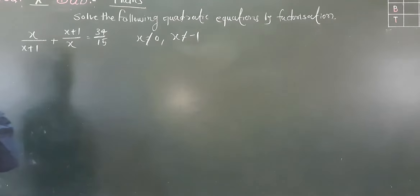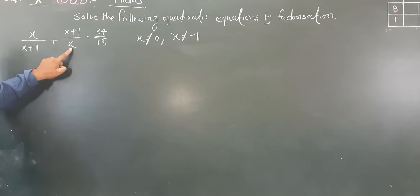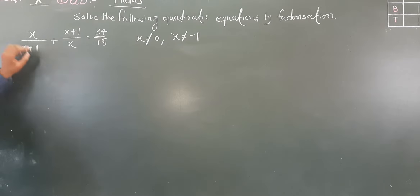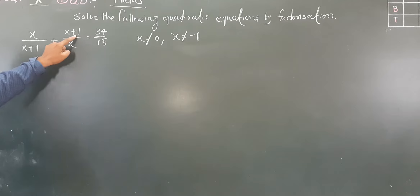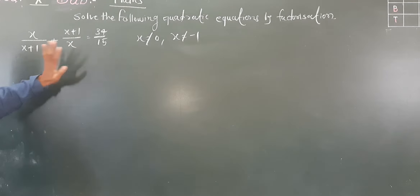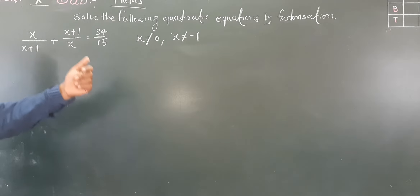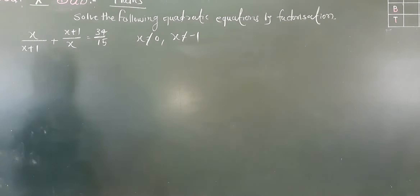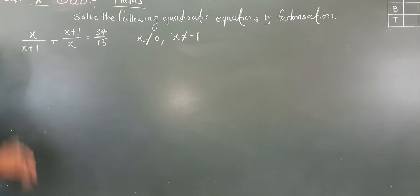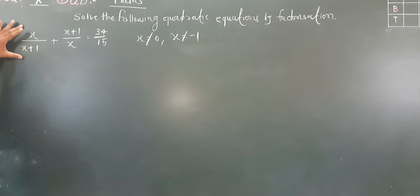These two conditions are given because if x equals 0 then the first term is undefined, and if x equals minus 1 then minus 1 plus 1 will be 0, making the denominator undefined. So now we are going to solve this — first we will try to make the denominators the same.